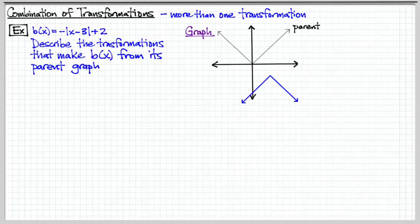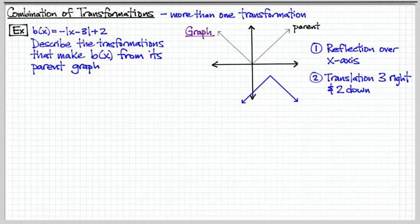If I take a graphing calculator, I see something like this. I know my parent function has this shape. When I graph it on a graphing calculator, I see that b(x) has this blue shape down here. We notice the following: one way we can interpret this is that the first thing that happened was a reflection over the x-axis. After the reflection, from the vertex standpoint, it got translated three units to the right and two units down. This is the idea of a combination of transformations.